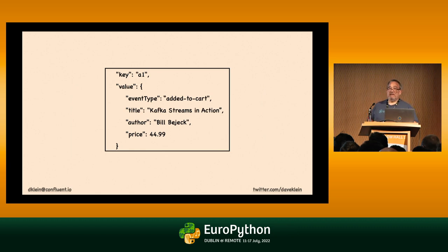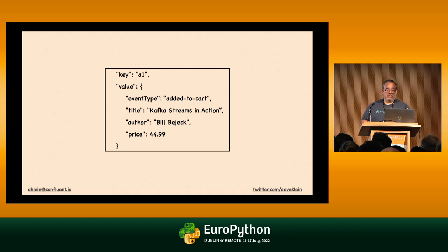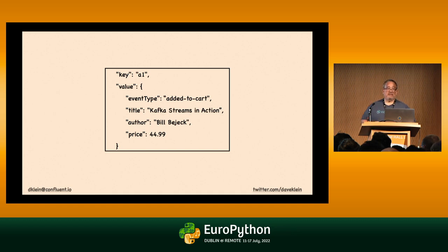In Kafka, events are just bytes — a very efficient binary format for transferring data. In our applications it would normally be something like a JSON object, or a serialization format like Avro or Protobuf. There are two main components to an event in Kafka: the key and the value. The key is generally a simple data type like a string, long, or UUID. The value is where you have your payload — some type of object with fields. It has to be serialized to bytes to send it to Kafka and deserialized on the other end.